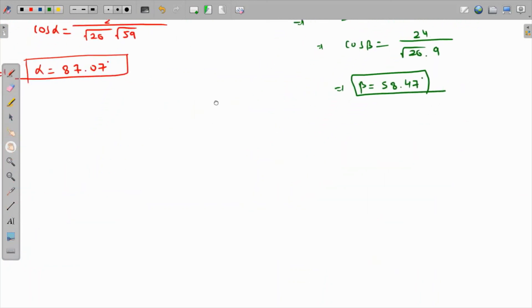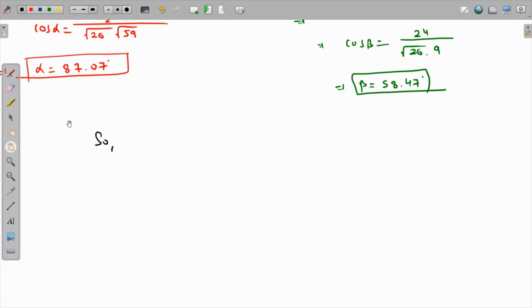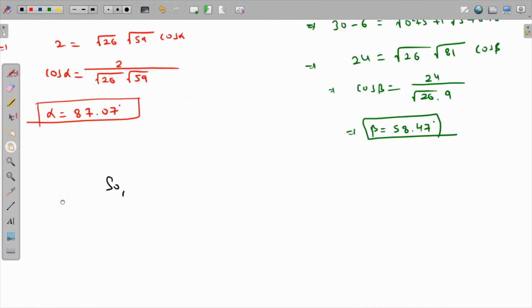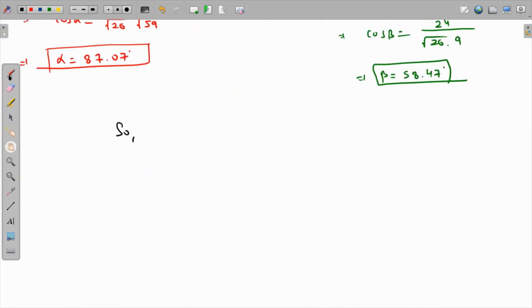The value of gamma, the third angle, is going to be, as per the property of a triangle, 180 minus alpha plus beta. Alpha is 87.07, beta is 58.47, and subtracting this from 180 comes out as 34.46 degrees up to two decimal places. Thank you.